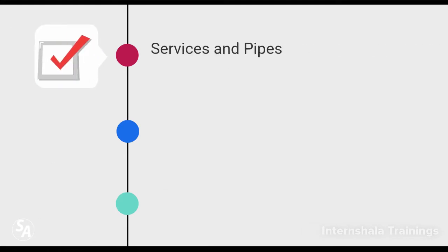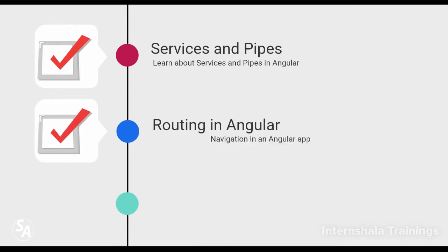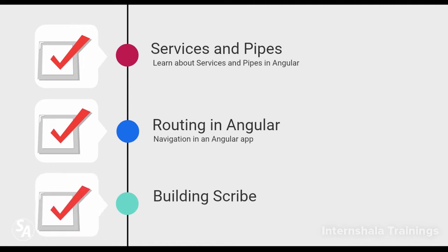In module 4 you'll learn all about services and pipes in Angular. In module 5 you will learn about routing or navigation within an Angular application. Finally, in module 6 we'll start working on our project called Scribe and finish the project.